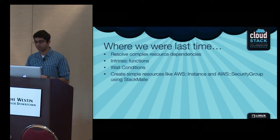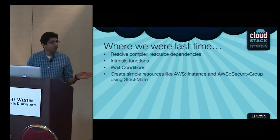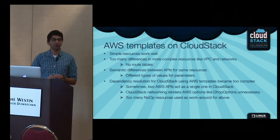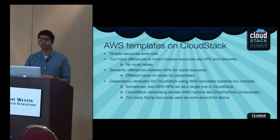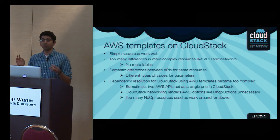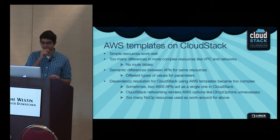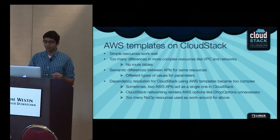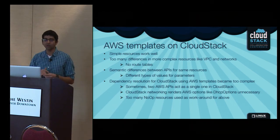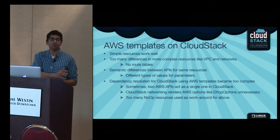Previously we could create simple resources like AWS instances and security groups, and we wanted to create more complex CloudStack resources. We tried executing AWS templates on CloudStack, and while simple resources like instances, security groups, and volumes work well since both platforms have very similar semantics, when you get to more complex resources like VPCs and subnets we found many differences between AWS and CloudStack definitions that hampered our ability to execute AWS templates as-is on CloudStack.